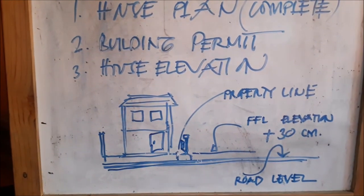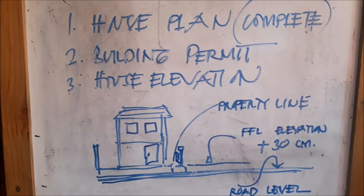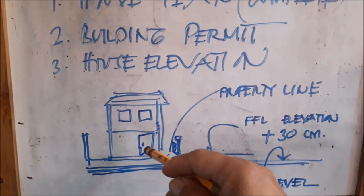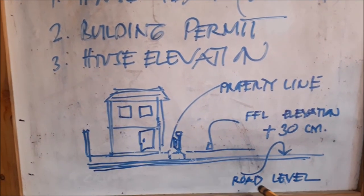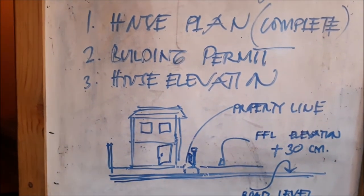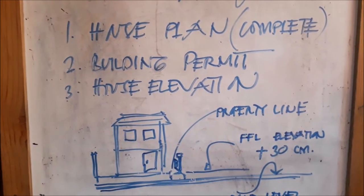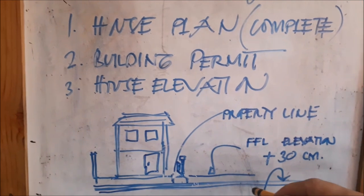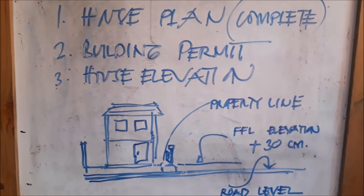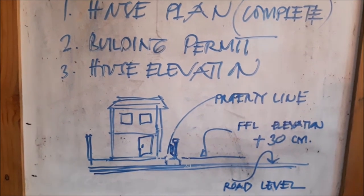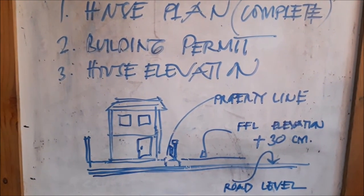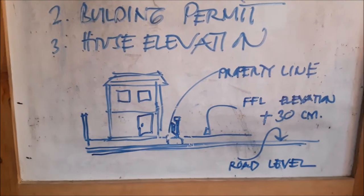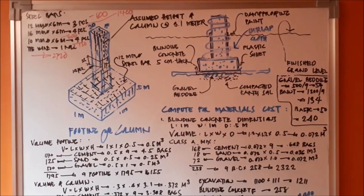Nasa desisyon ninyo po yan. Pwede kayong mag-Google para malaman ang best elevation o ang difference in elevation between ng inyong kabahayan sa loob at sa road level. Mas maganda pong alamin kung ano ang ating finished floor line. Marahil naka-indicate na yan sa house plan — kung wala, ipaalam sa arkitekto. Kung hindi po naka-include, kayo na po magtakda: plus 30 cm pataas mula sa road level.